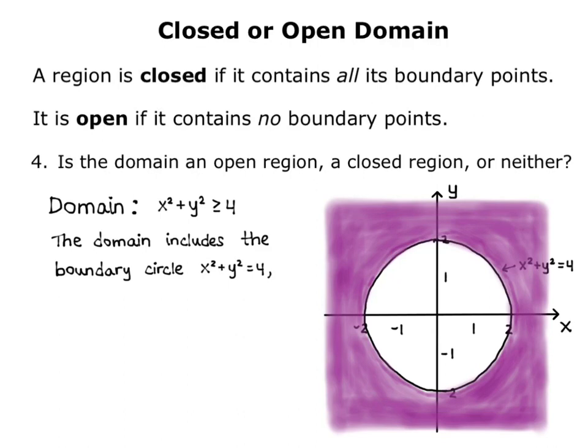Because of the equality bar, the domain includes the boundary circle x squared plus y squared equals 4. So, the domain is closed.